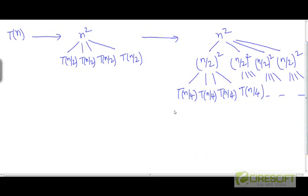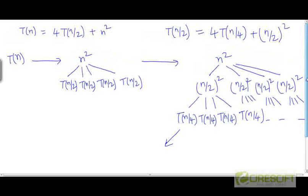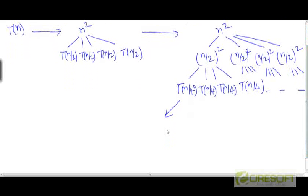We can go on expanding the levels. In the next level, we get T(n/4) = 4T(n/8) + (n/4)². So we substitute T(n/4) and end up with more subproblems — 4 times more subproblems than the previous level, each with size n/8. We can continue doing this until we hit subproblems of size 1.